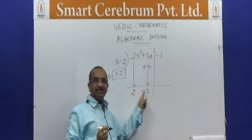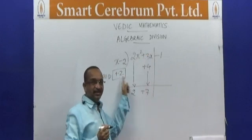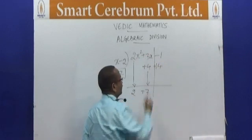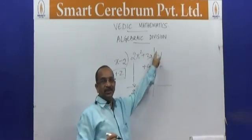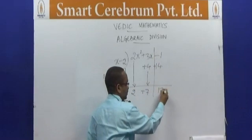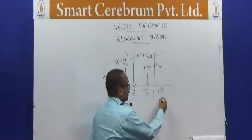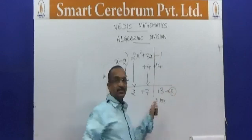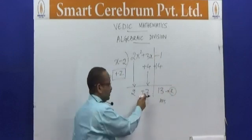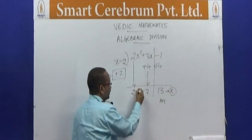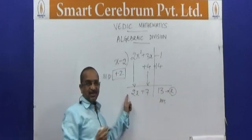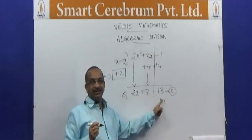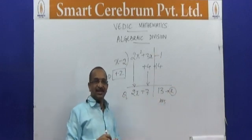Again the same thing: multiply 7 with the modified divisor — that is 7 into 2 is 14, plus 14. Now add them: plus 14 minus 1 is 13. Whatever you get on the right hand side is your remainder — that is, 13 is your remainder. Leave the last value as the constant term and go on increasing the degrees, that is 2x. So my quotient is 2x plus 7 and my remainder is 13. A simple example.